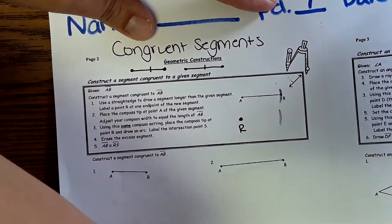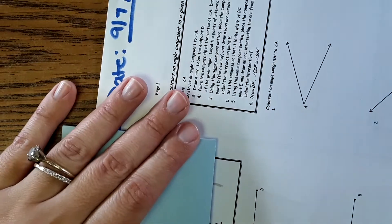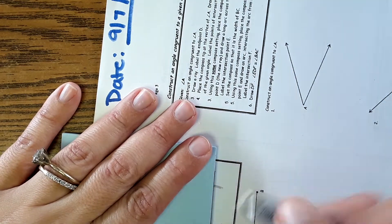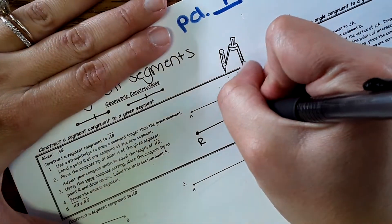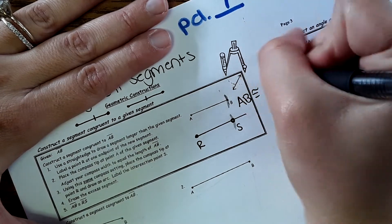Then, as you may predict, you have to connect point R to that mark. Label that point S, and so AB is congruent to RS.